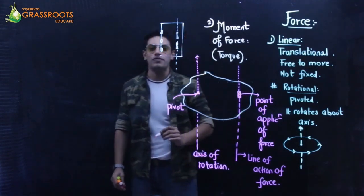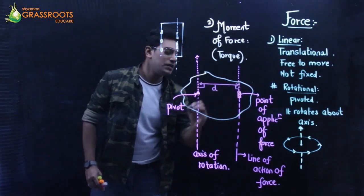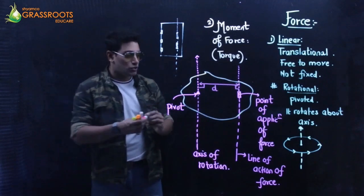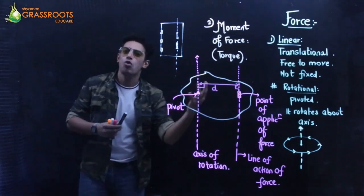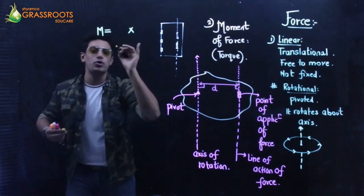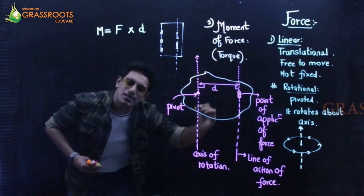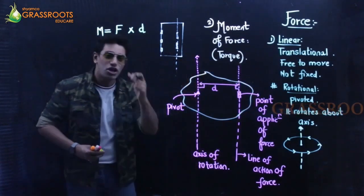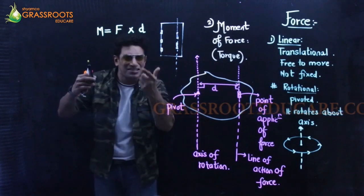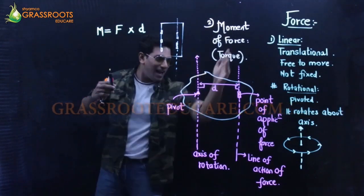I have selected a point as the point of application of force, and the perpendicular distance — 90 degrees — is the distance between the axis of rotation and the line of action of force, which I call D. So the moment of force, the turning effect represented by M, is the product of the magnitude of force and the perpendicular distance D between the axis of rotation and the line of action of force.